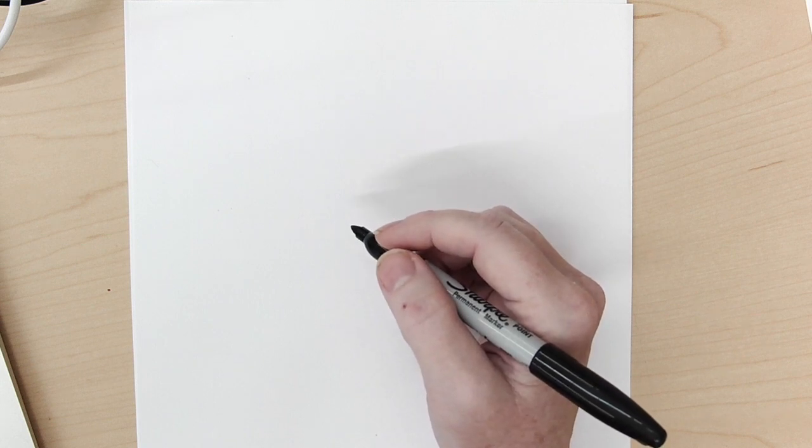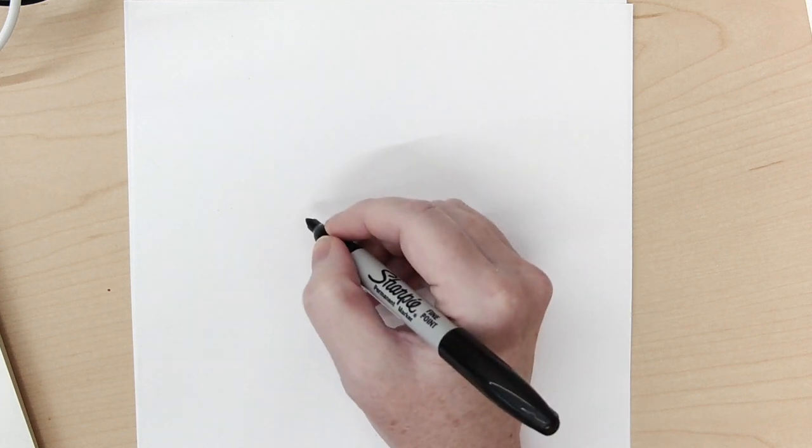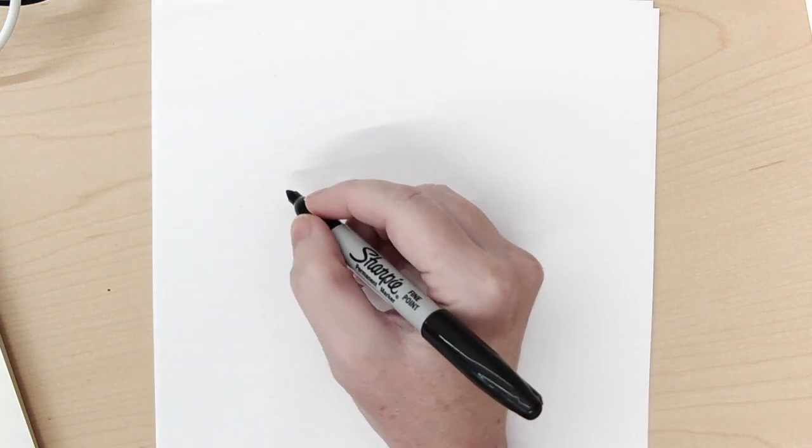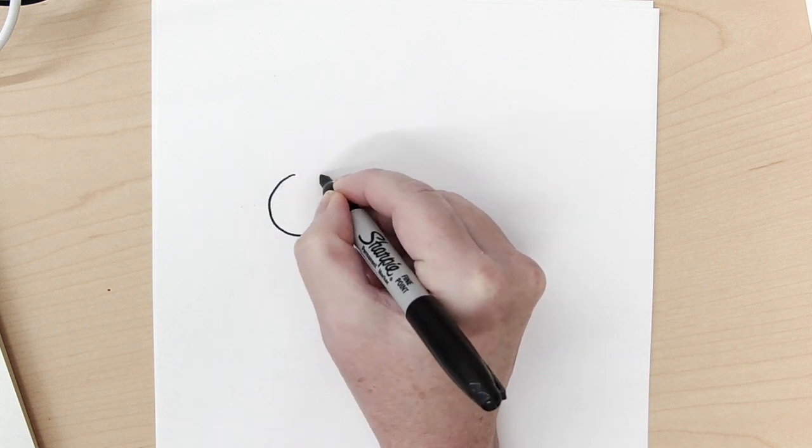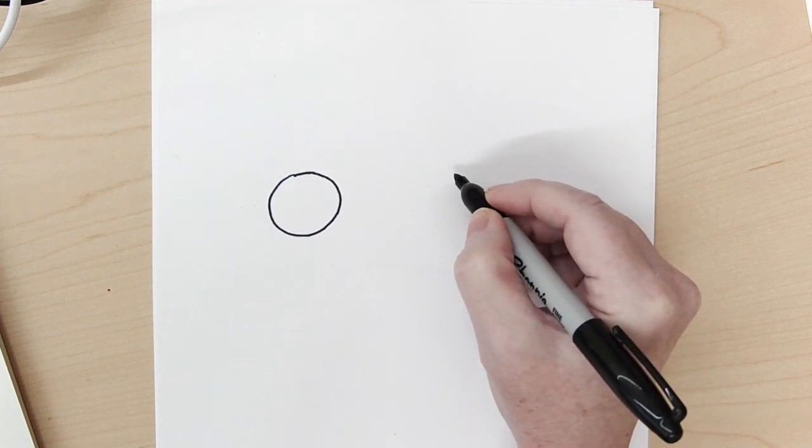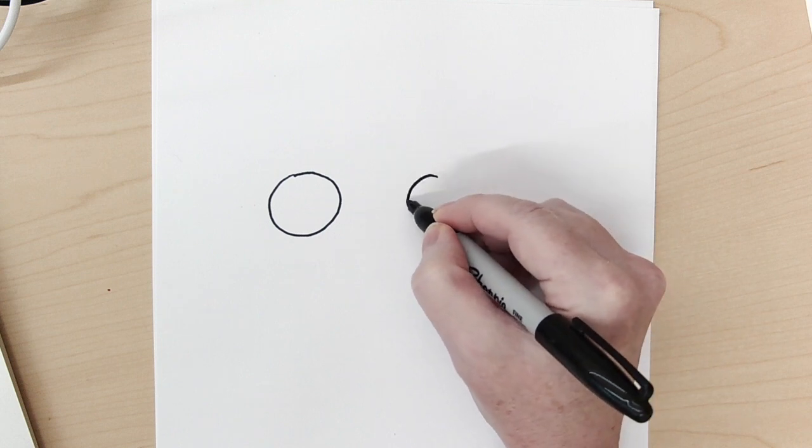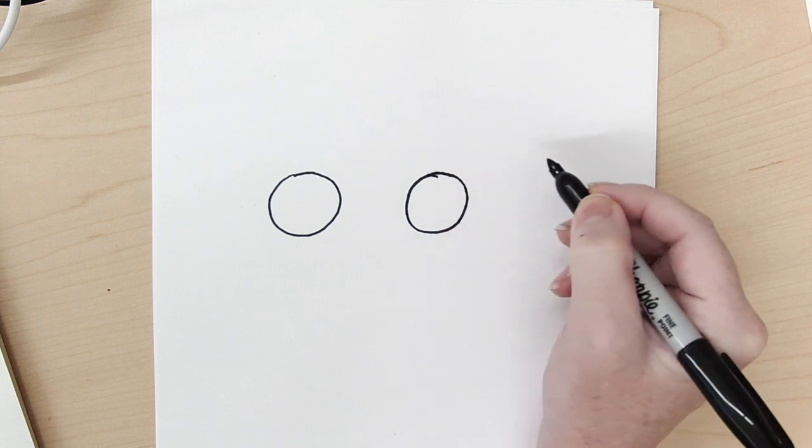So what I'm first going to do is I'm going to draw the eyes, and I'm working on just a part of the paper here. I'm going to draw the eyes nice and big, and my eyes are about the size of a dollar coin or a euro, so they're a little bit bigger than a quarter.